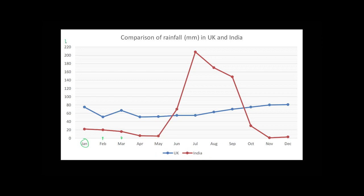The other things that obviously need to be on any graph — we need to label the axes. This would be millimeters in terms of a label for the numbers down here. Normally I'd fit that more properly over here, but it's a little bit tricky to do online rather than on paper. And then we've obviously got the months down the bottom. You could put a label saying 'months' at the bottom, but that would probably be a bit of overkill for this particular graph.